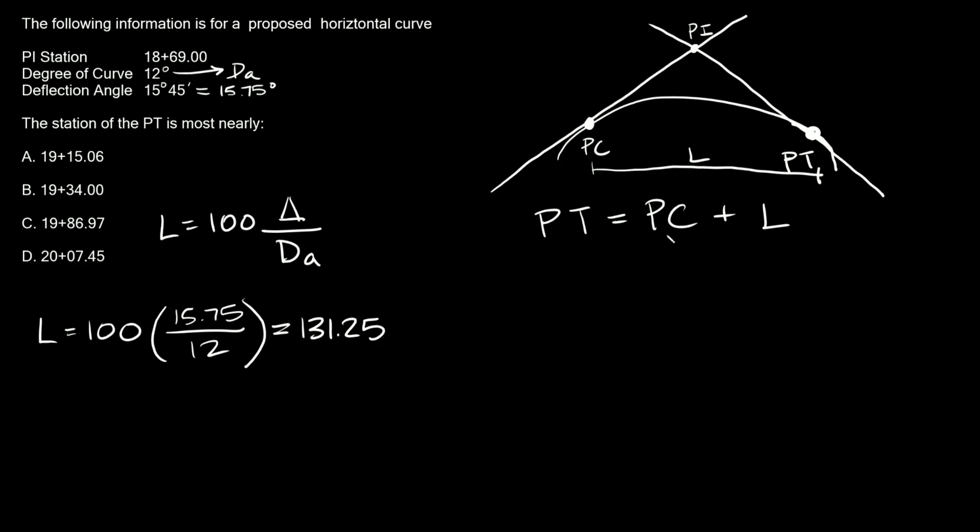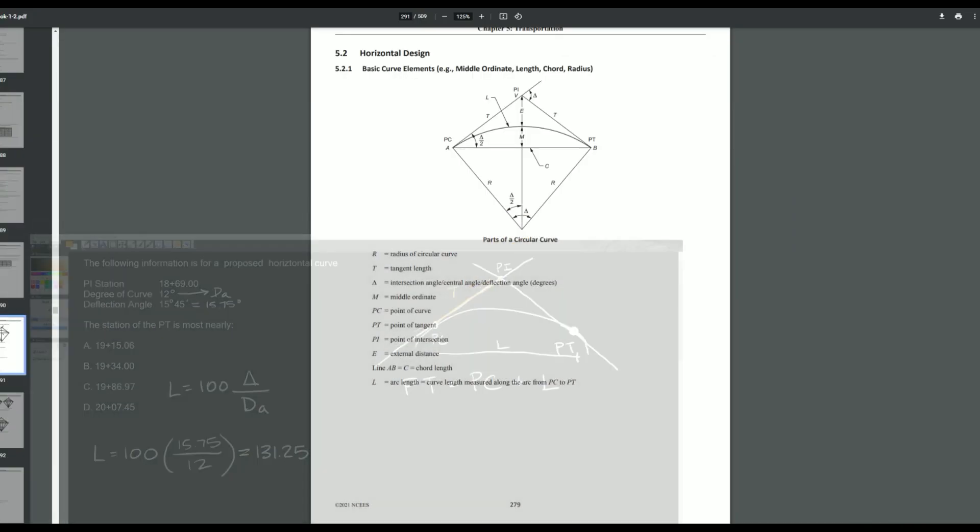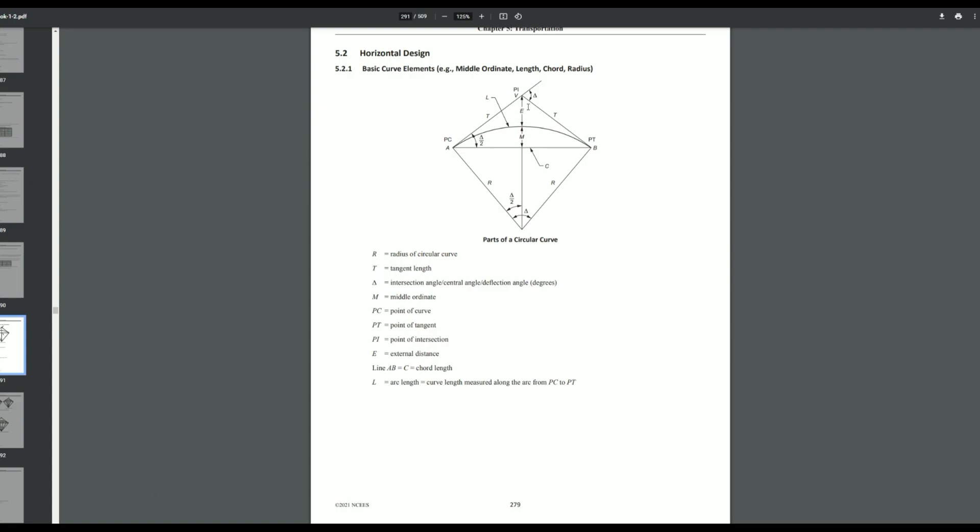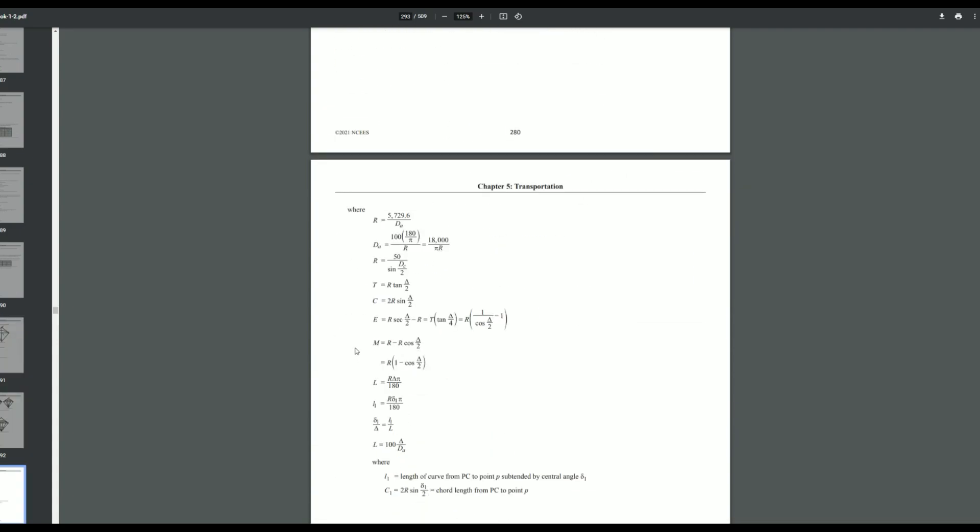So one way we can solve for PC is by finding the distance from the PI to the PC, and that distance is known as the tangent distance. So if you go back to your handbook, it shows us that distance from the PI to the PC is the tangent distance.